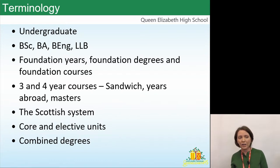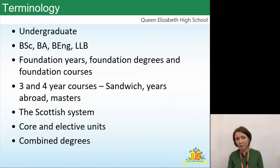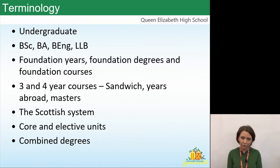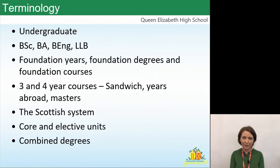Some universities will try to attract students onto master's degrees at the same time as they sign up for their undergraduate — an integrated process where you apply for a four-year course. Students need to do their own research on the advantages and disadvantages of signing up for that. Scottish universities make it slightly more complicated in that they sometimes use the term 'master's' to refer to what would be a BA or BSc in England.